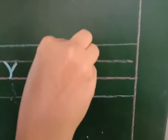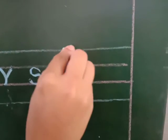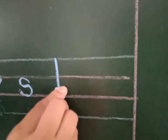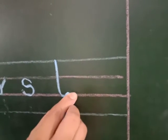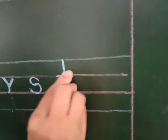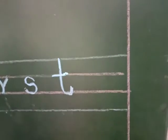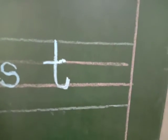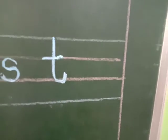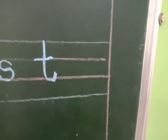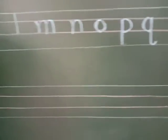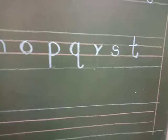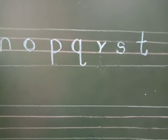Now we are going to learn small t — how to write it. Standing line, curve line, sleeping line. Small t. Now we are going to learn the next letter. Which letter comes after t?